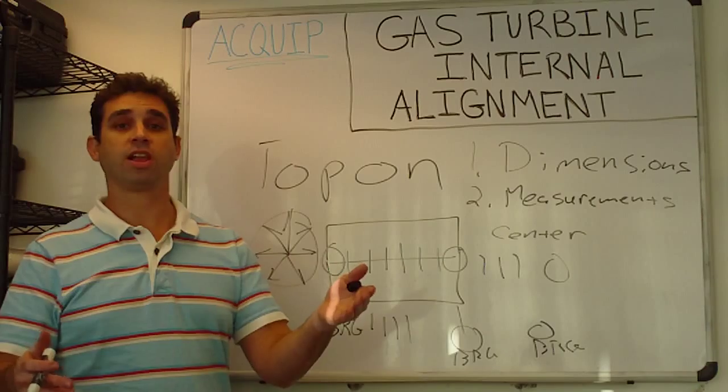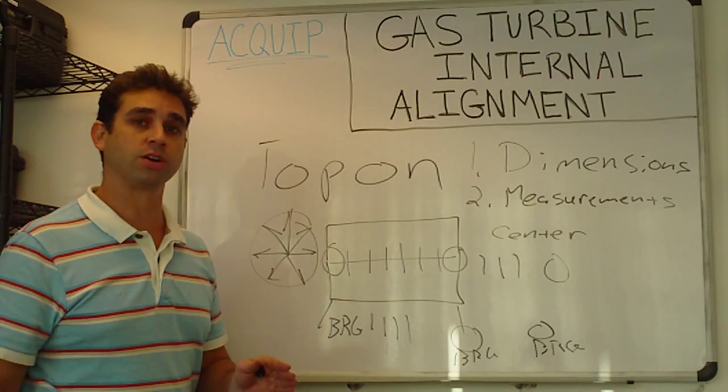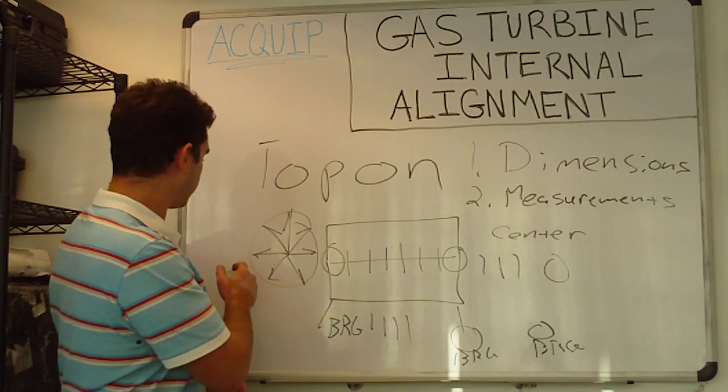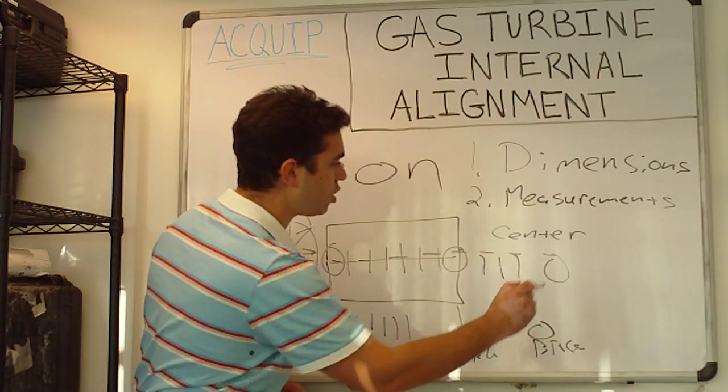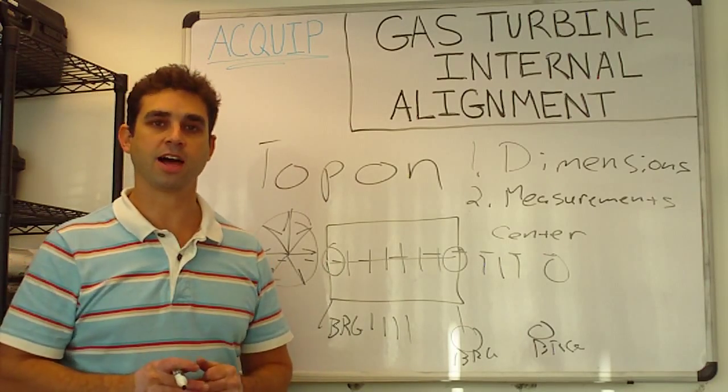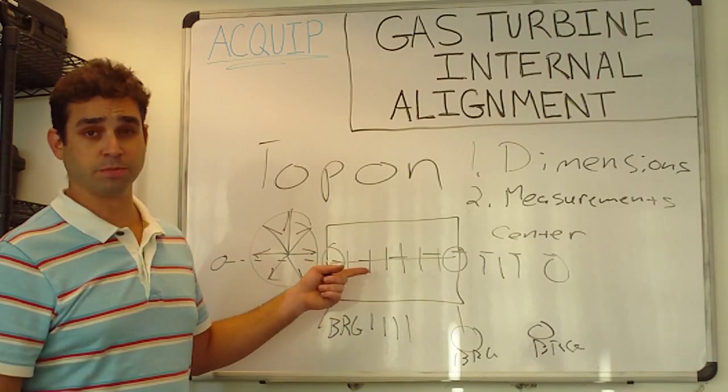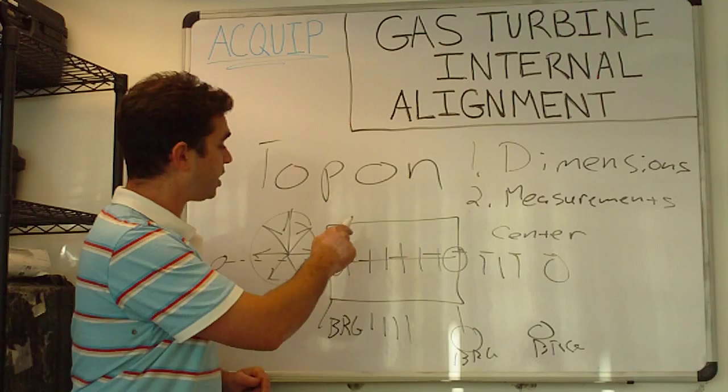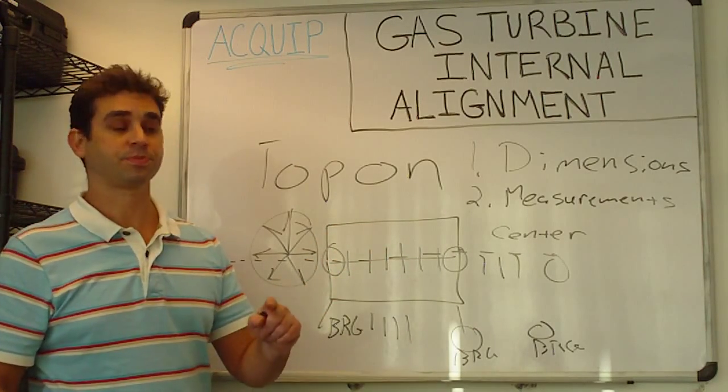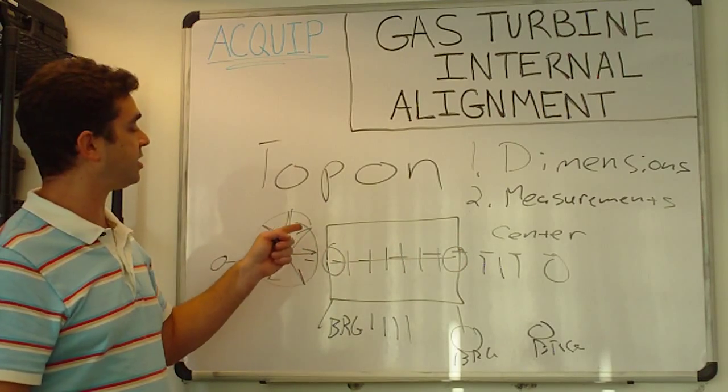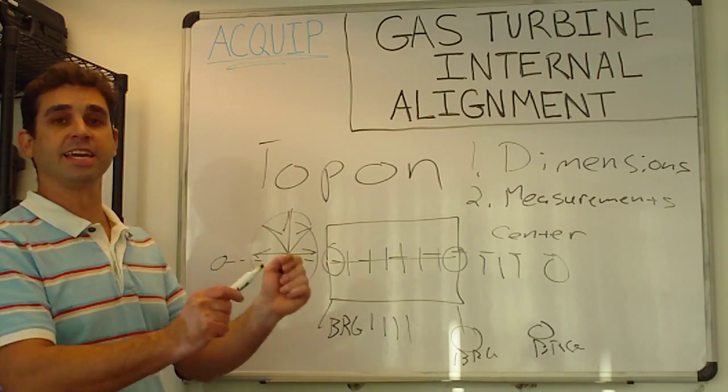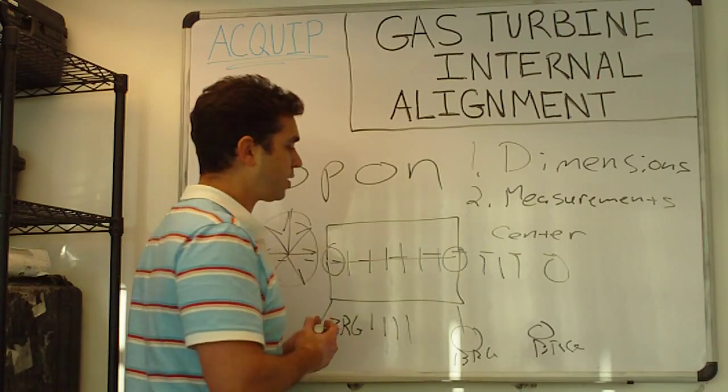We usually do laser alignment when we do a gas turbine internal alignment. And so what we'll do is we'll set a laser up and shoot the laser through the turbine and that'll be our reference line. It'll act as a datum and then we'll measure each one of these bores. We'll know the center of each bore and they'll be related to the laser so that each bore can be tied together inside of our data.